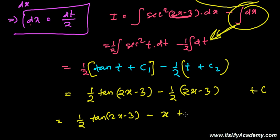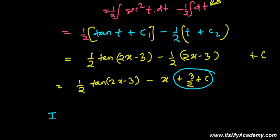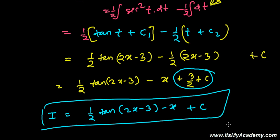It's plus 3 by 2 plus constant. And again my dear friend, 3 by 2 is constant, so this all thing is constant. And our integral is going to get 1 by 2 tan 2x minus 3 minus x plus some constant. And that's our solution answer.